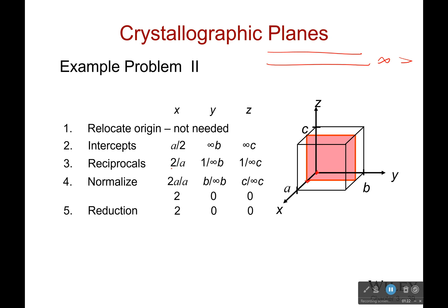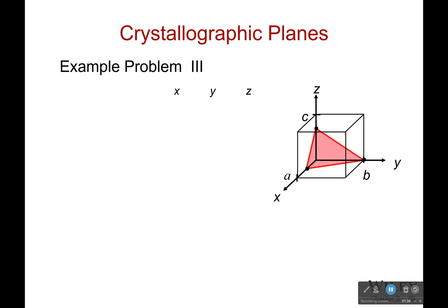And then reduce it. I'm not going to make it 1, 0, 0, even though I technically could divide by 2. I would only do that if I had other numbers in here. So my Miller indices would be 2, 0, 0 in parentheses. Okay, let's try one more.